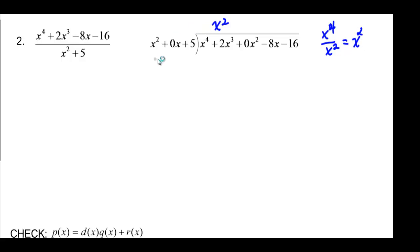And when we multiply, we're going to have X to the fourth and 0X cubed plus 5X squared. We're going to subtract, but that means that we change all the signs and we can add. These cancel. And this is 2X cubed with minus 5X squared. And we're going to bring down the next term, minus 8X.